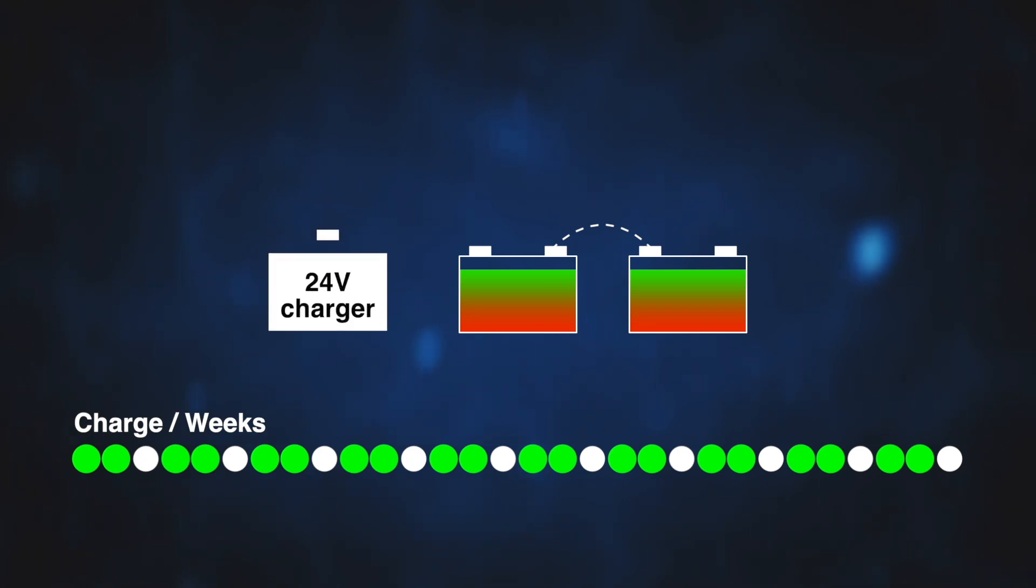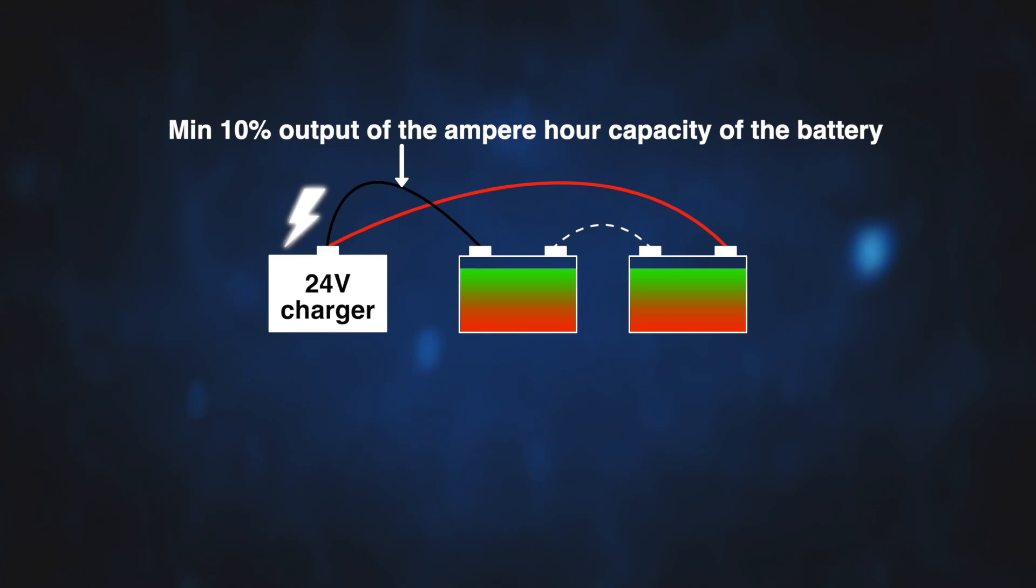If possible, always use an external charger with a minimum of 10% output of the amp power capacity of the batteries. It must also have intelligent charging control and temperature compensation.